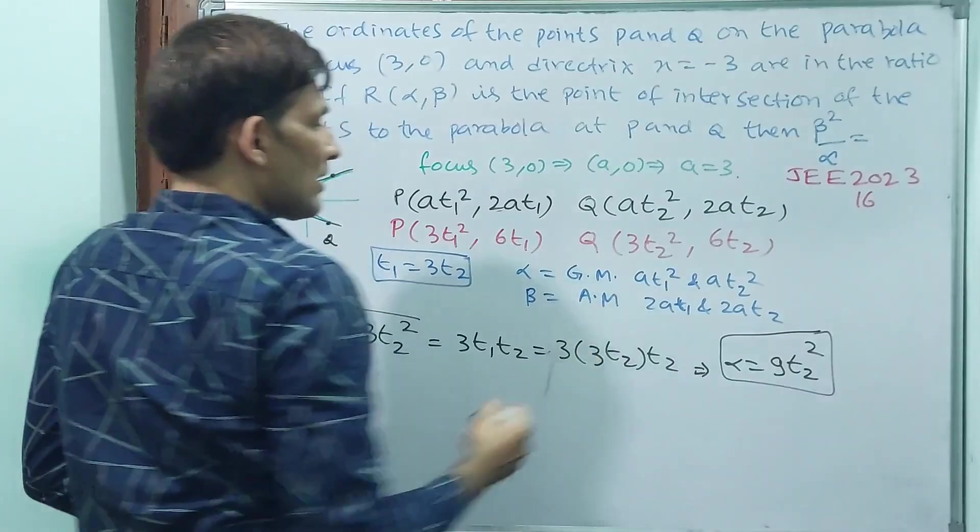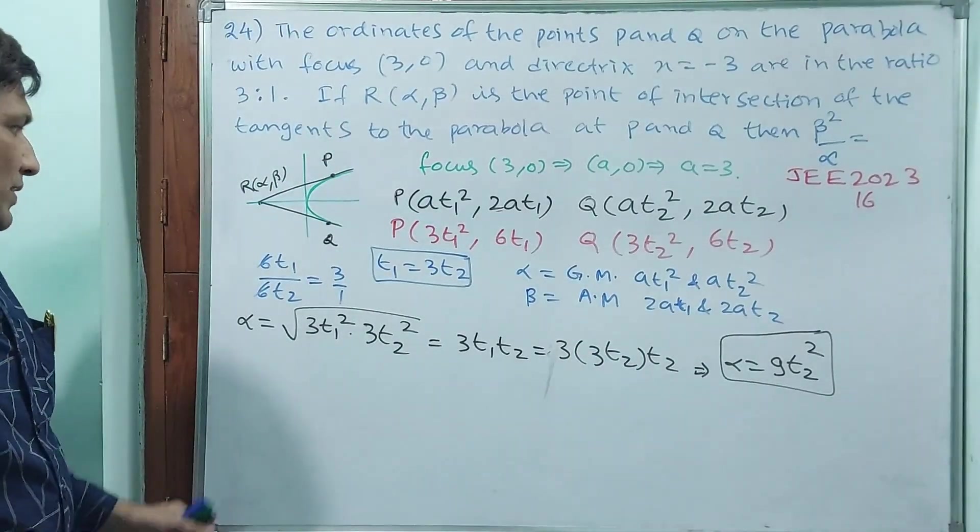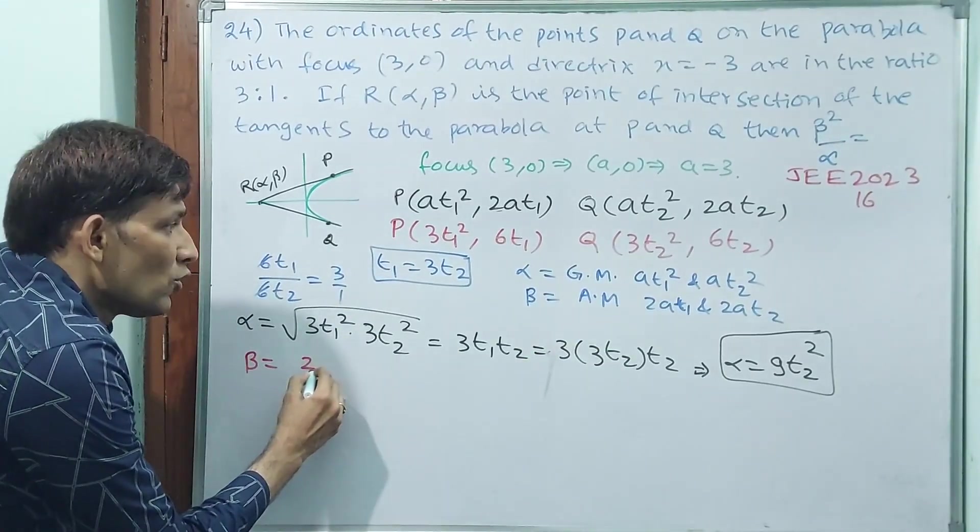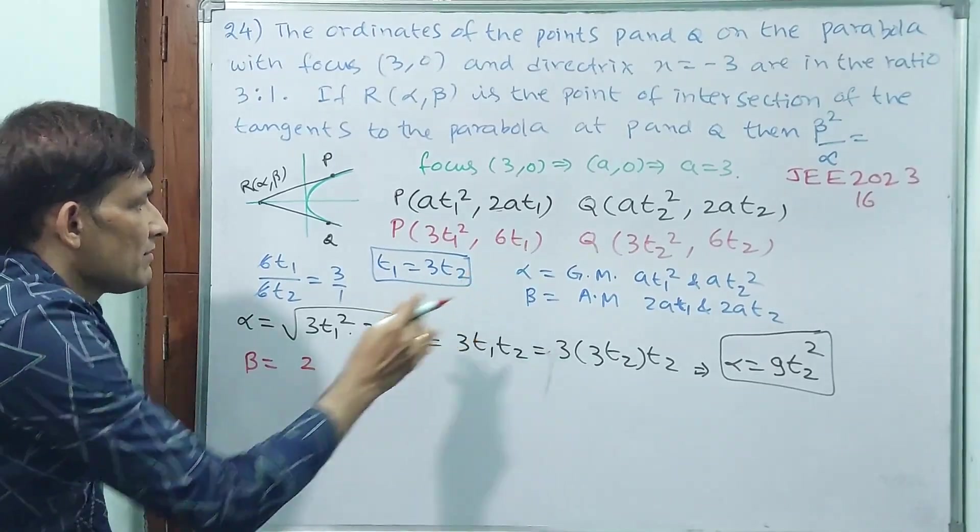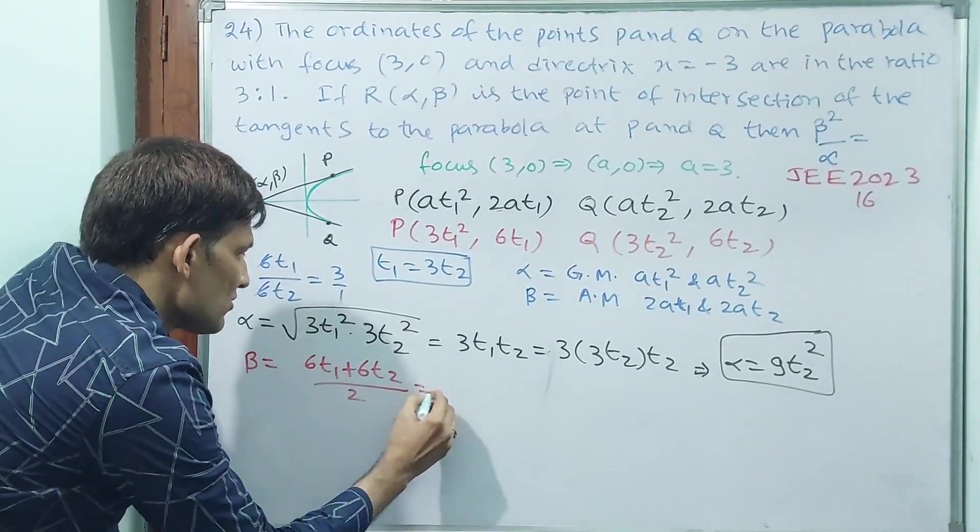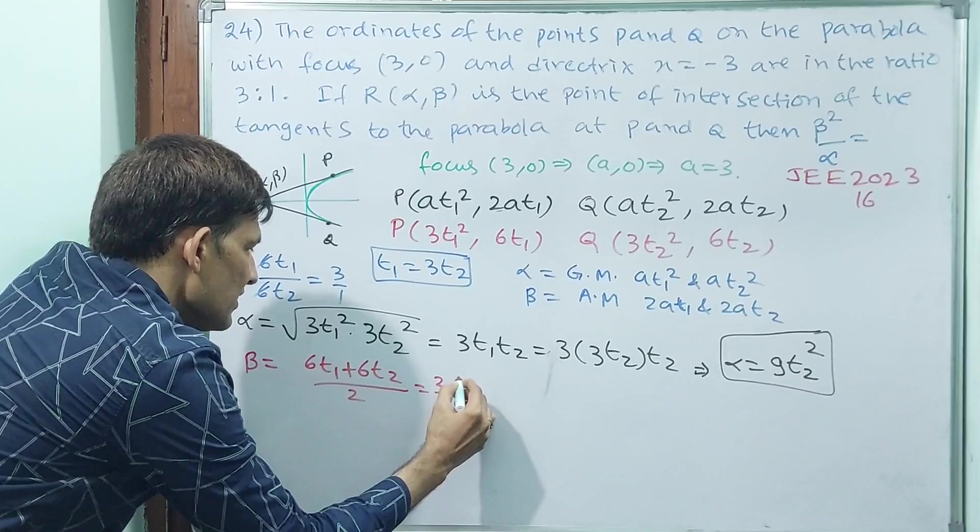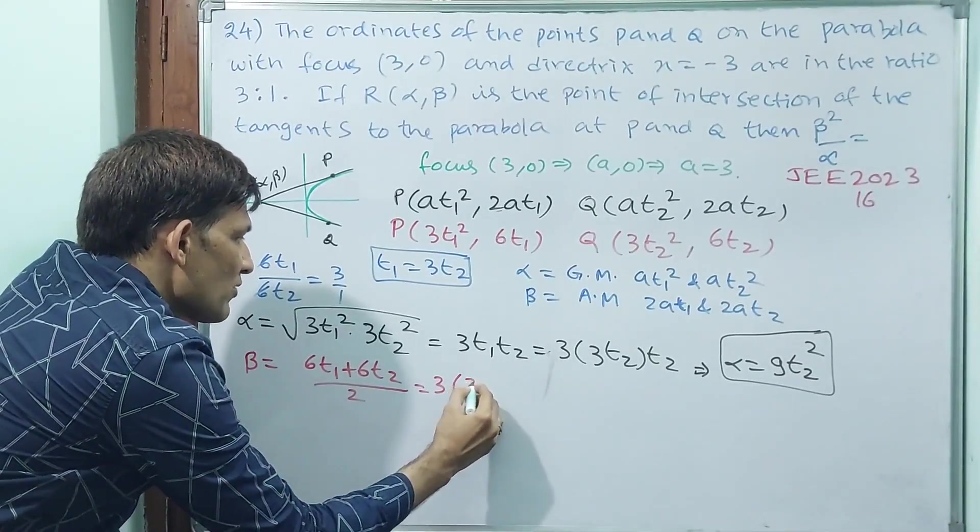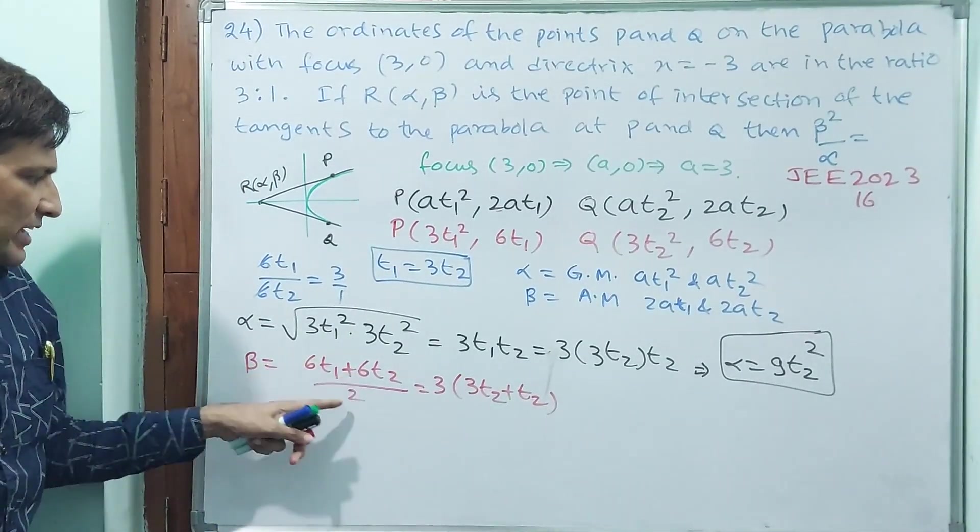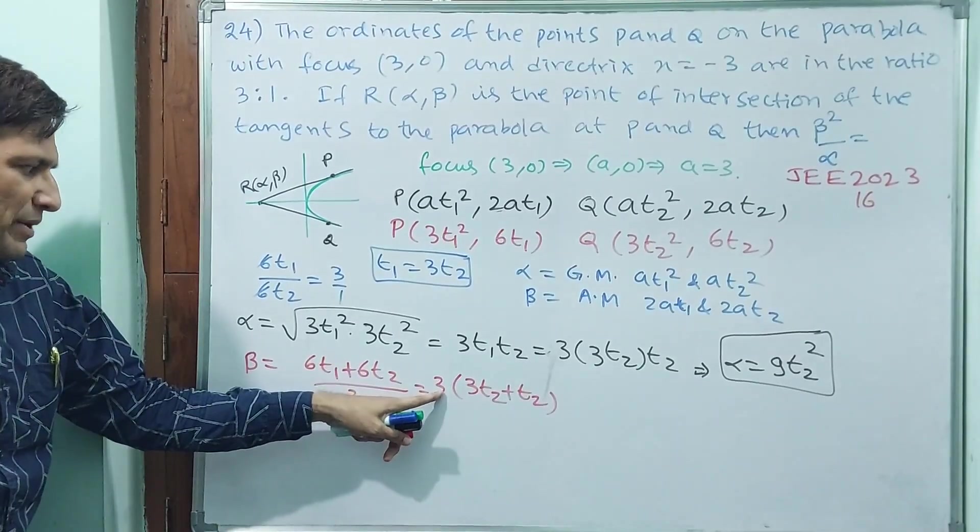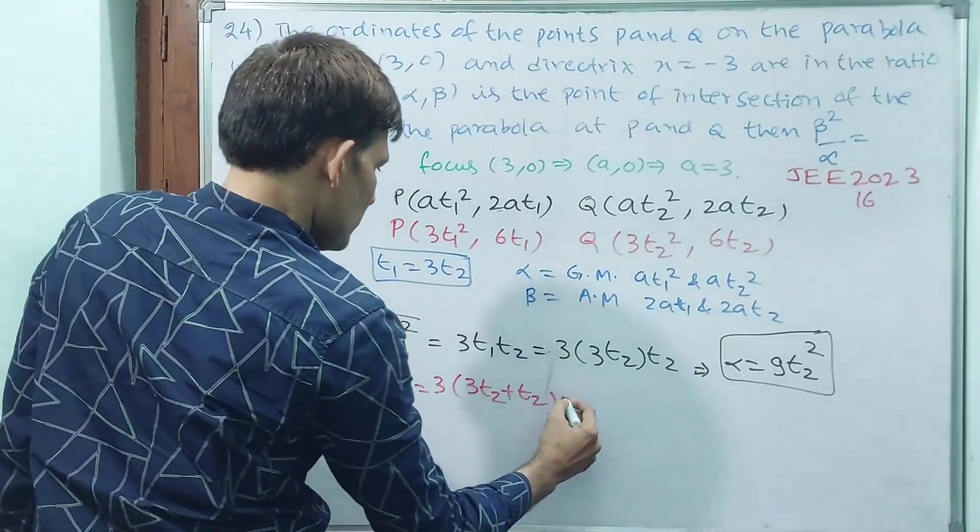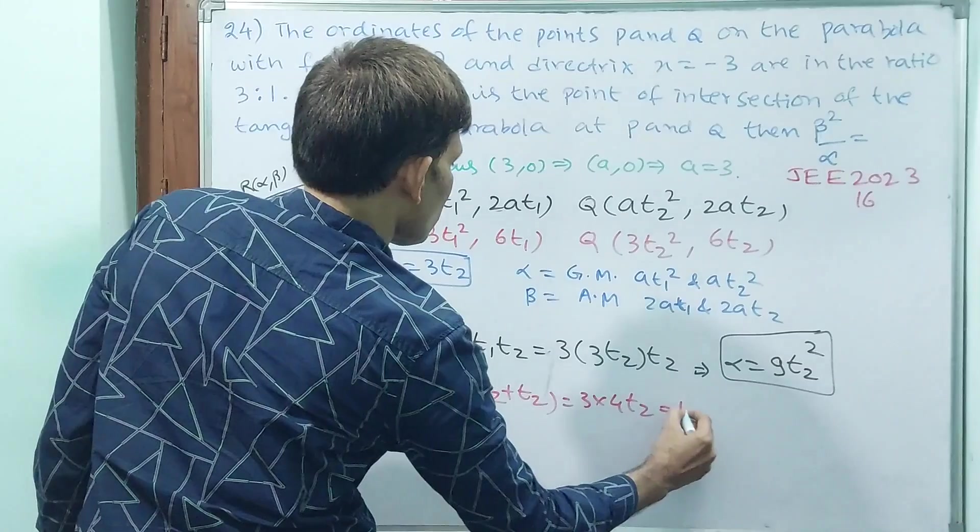You take it to one side because beta squared by alpha you have to find. Another thing: beta. Beta is arithmetic mean of these two. Arithmetic mean, what you are going to do? (6t₁ + 6t₂)/2 = 6(t₁ + t₂)/2 = 3(t₁ + t₂). t₁ = 3t₂, so 3(3t₂ + t₂) = 3(4t₂) = 12t₂.